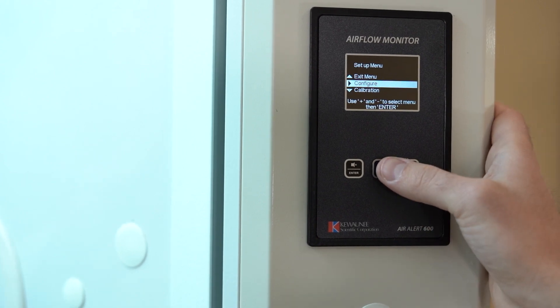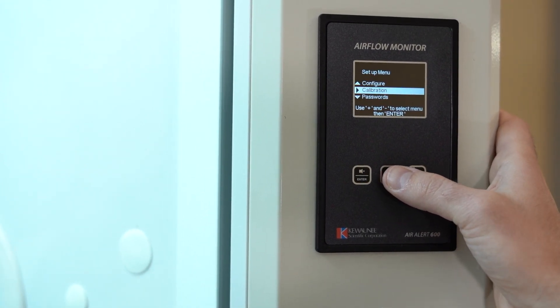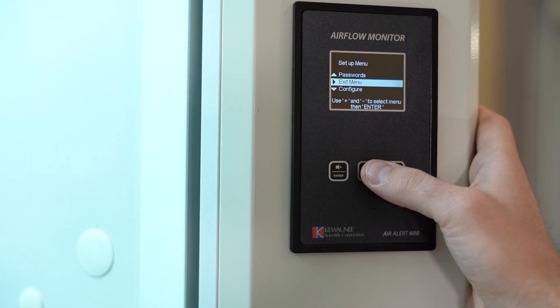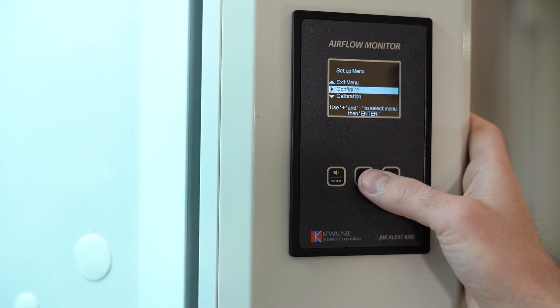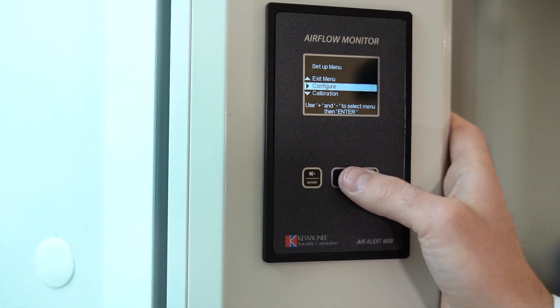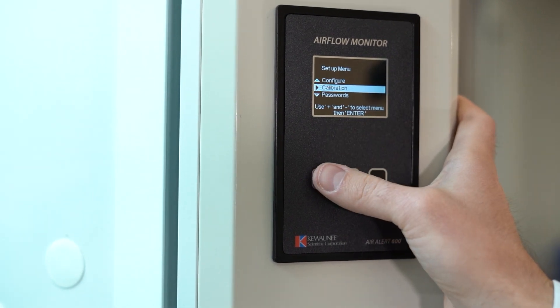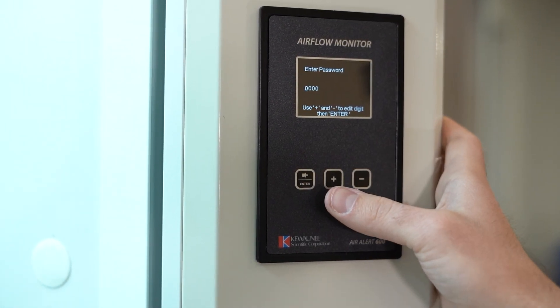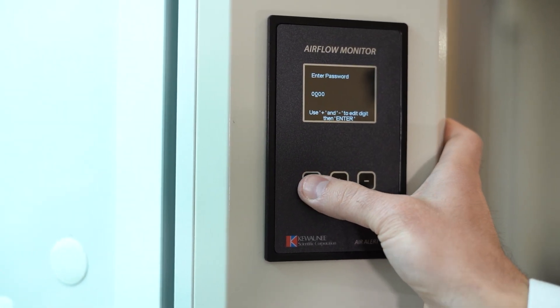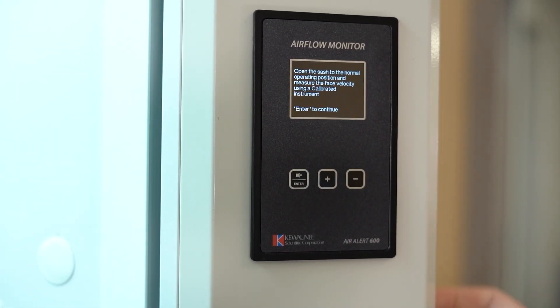The following steps will explain how to calibrate the airflow monitor using a thermal anemometer. From the main menu, enter the setup menu, then calibration. The default password is 0000. The screen will walk you through the steps.